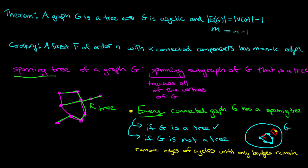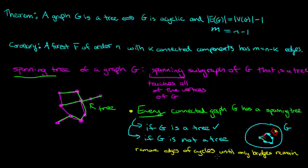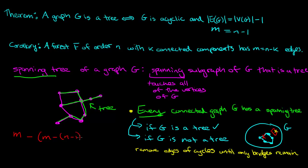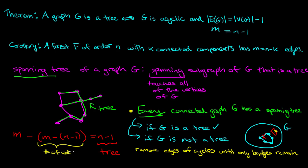Spanning trees are sort of easier to work with. Trees themselves are sometimes easier to work with than graphs, and knowing the properties of the spanning tree of a graph can tell you something about the graph. When you do this process of removing edges of cycles until only bridges remain, you can figure out exactly how many things you need to remove. If G had M edges, we're going to have to remove exactly M minus (N minus 1) of them, because we want M minus this number to equal N minus 1, which gives us a tree at the end.